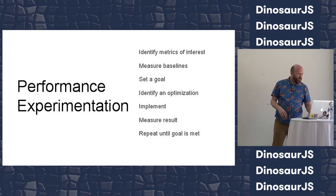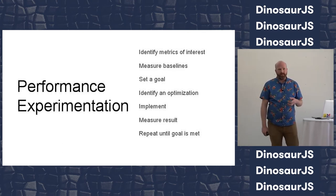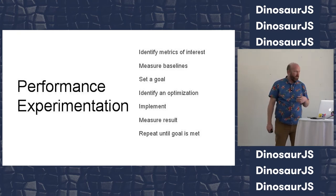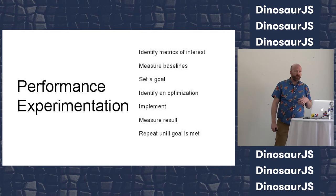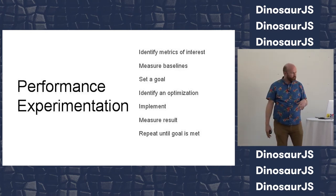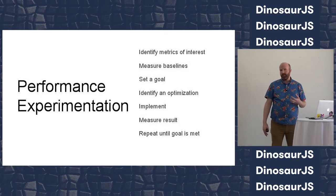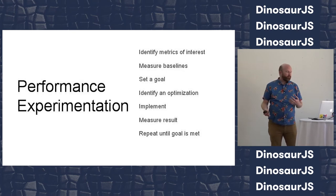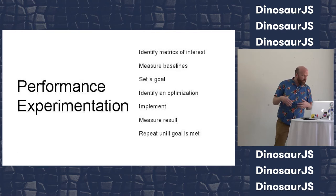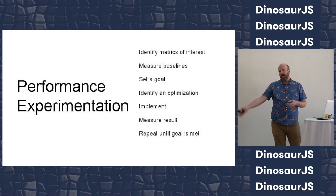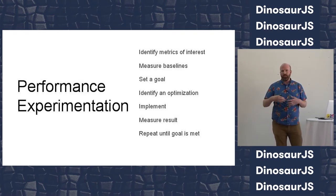In performance experimentation, things look a little more like this. First, you identify the metrics you're interested in. Then you measure baselines — what is your current performance on these metrics right now? Then you set a goal, because it's important to have a reason you're doing things rather than just making stuff faster for the heck of it. After that, you identify a potential optimization, implement it, measure the result, and then look at how far you've gotten versus your goal — and either keep going or you're done.